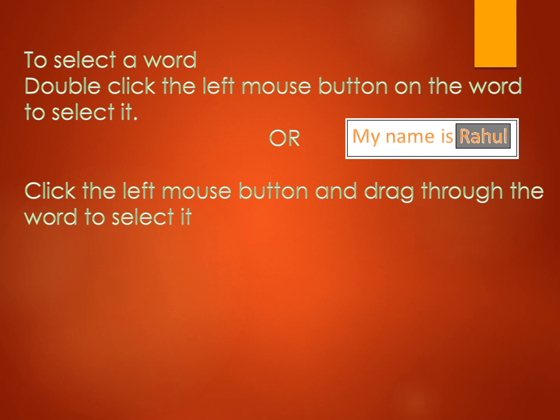To select a word, double-click the left mouse button on the word to select it, or click the left mouse button and drag through the word to select it. For example, if I have to select the word 'Rahul', I will place the cursor on the word and double-click the left mouse button. Alternatively, place the cursor on the starting letter of the word, then press the left mouse button and drag it through the word. These are the two ways you can select a word.